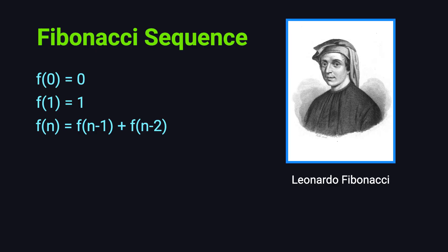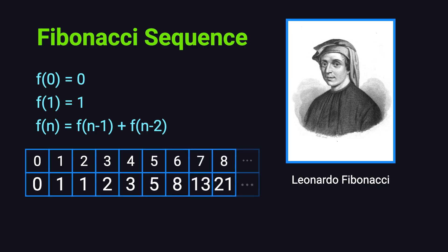For example, F0 is 0, F1 is 1, so F2 is 0 plus 1, which is 1. Then F3 is 1 plus 1, which is 2. After that, the sequence continues: 3, 5, 8, 13, 21, and so on.